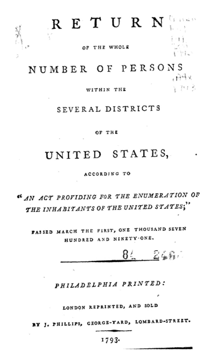The 1790 United States Census was the first census in the history of the United States. The population was recorded as 3,929,214 as of Census Day, August 2, 1790, as mandated by Article 1, Section 2 of the United States Constitution and applicable laws. The law required that every household be visited, that completed census schedules be posted in two of the most public places within each jurisdiction, and that the aggregate amount of each description of persons for every district be transmitted to the President. U.S. Marshals were responsible for governing the census.